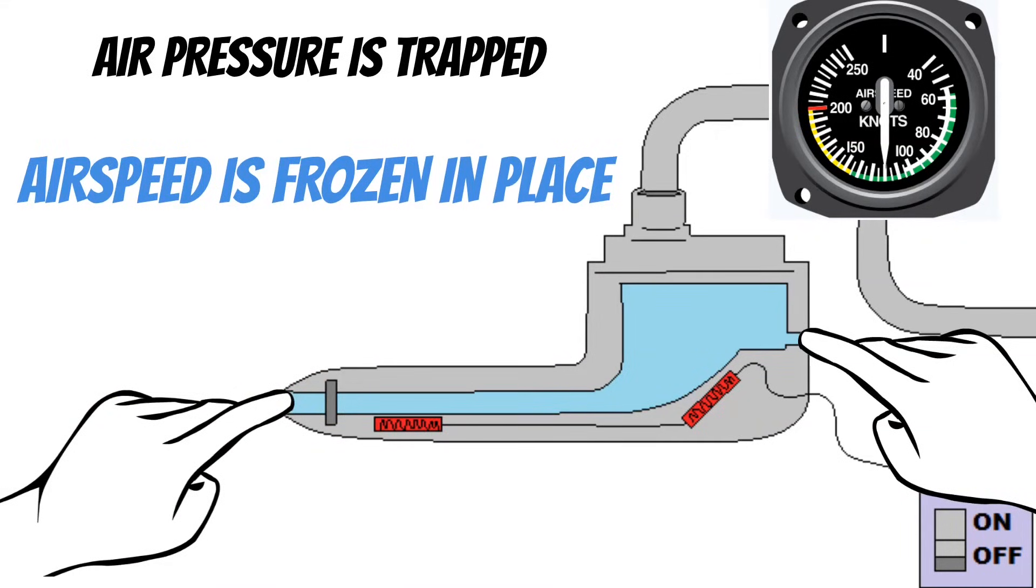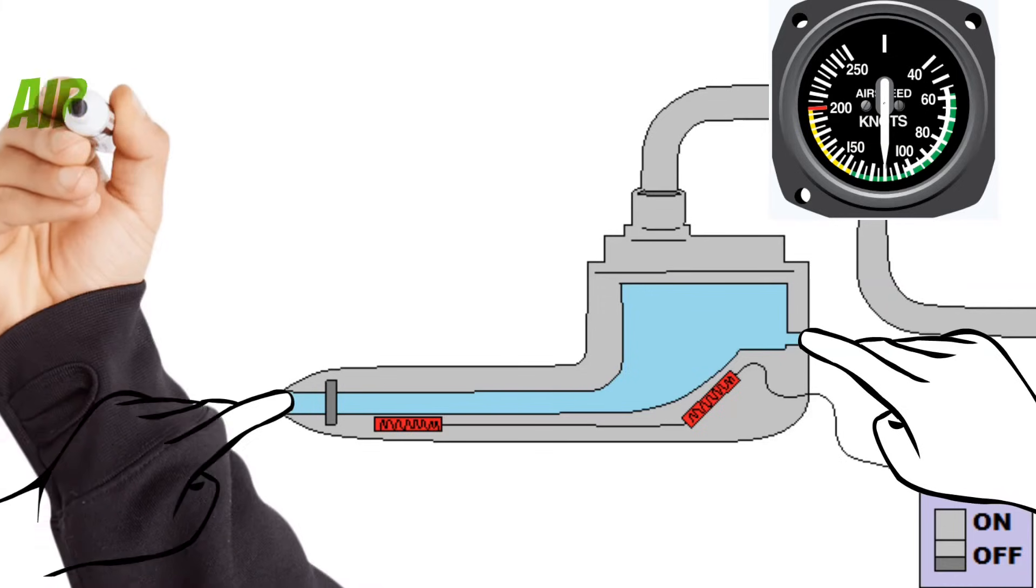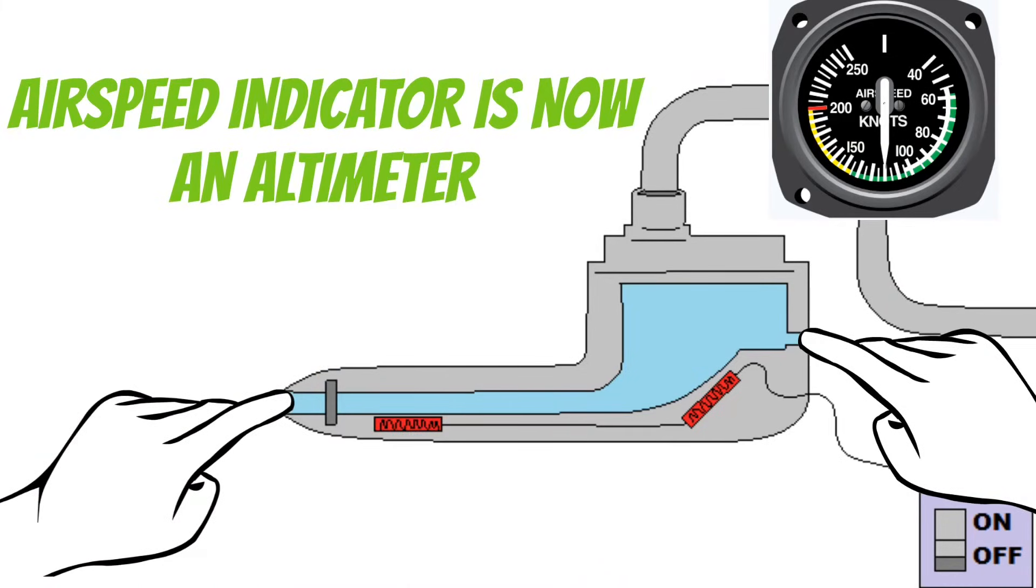From here, if the static port is also plugged, you won't see any change. But if the static port is clear, then the airspeed indicator will make minor changes with altitude. I like to tell students that your airspeed indicator just turned into an altimeter at this point.